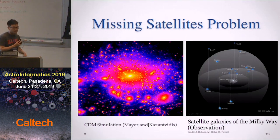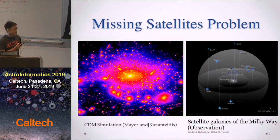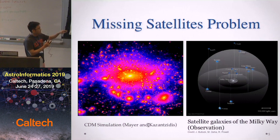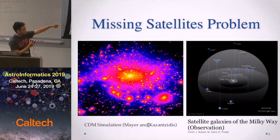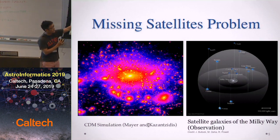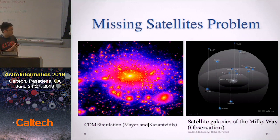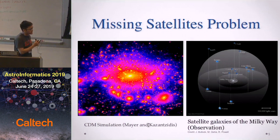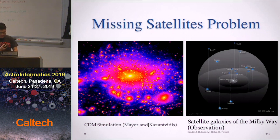We know that dark matter exists, and on large scales it performs very well compared with N-body simulations. But on small scales there are still some issues. For example, N-body simulations of cold dark matter usually produce a large number of small satellite halos around big halos. We would expect to see hundreds or thousands of these subhalos around our Milky Way, but observations only show roughly 50. So the task is whether we can use cosmological surveys to detect some of these subhalos.